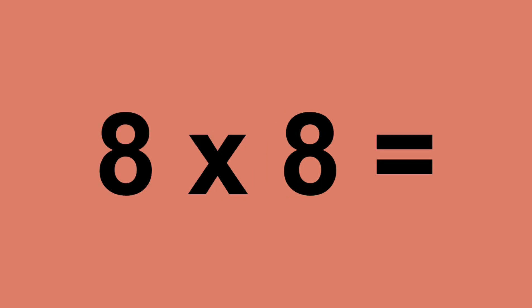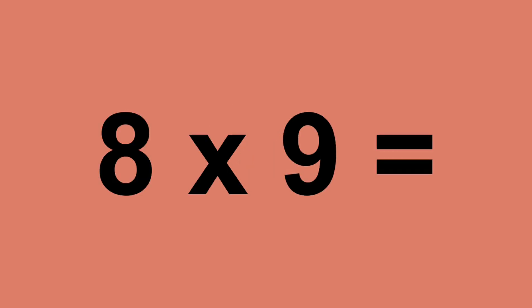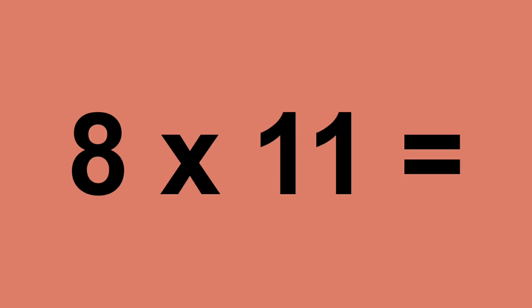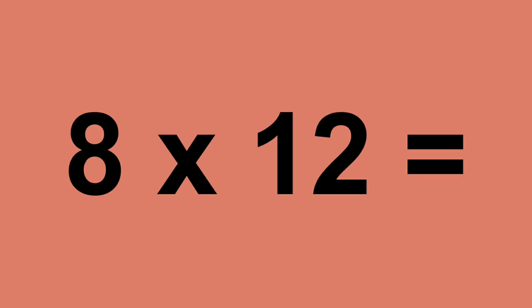8 times 7 equals 56. 8 times 8 equals 64. 8 times 9 equals 72. 8 times 10 equals 80. 8 times 11 equals 88. 8 times 12 equals 96.